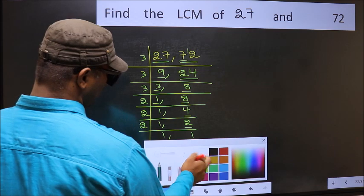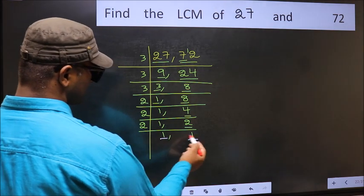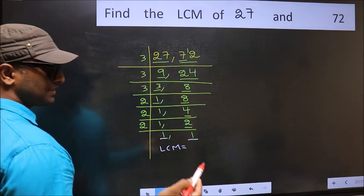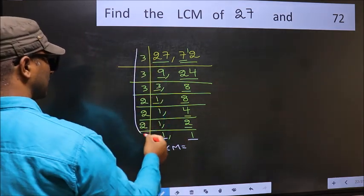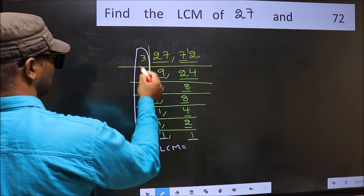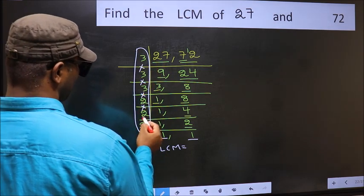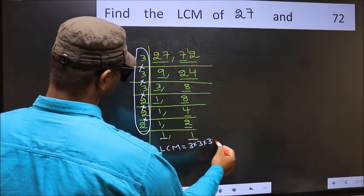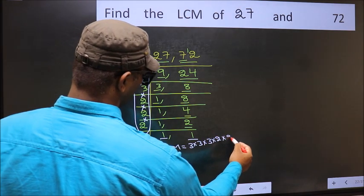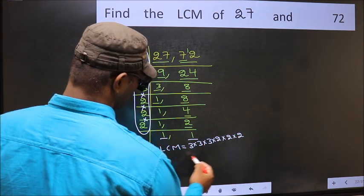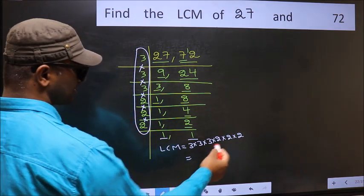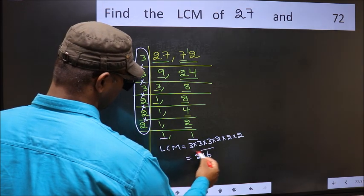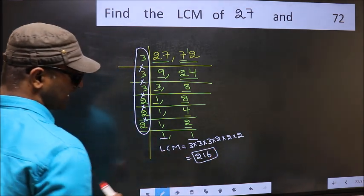We got 1 in both places, so our LCM is the product of all these divisors: 3 times 3 times 3 times 3 times 2 times 2 times 2 times 2. When we multiply these numbers, we get 216 as our LCM. Thank you.